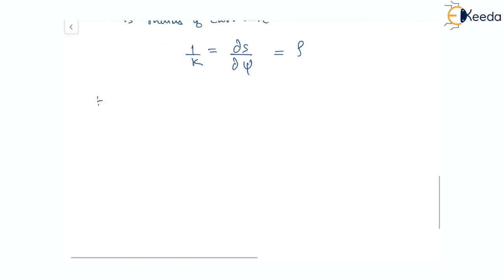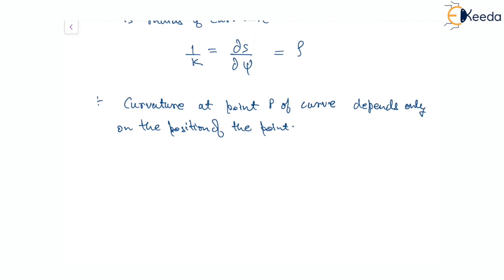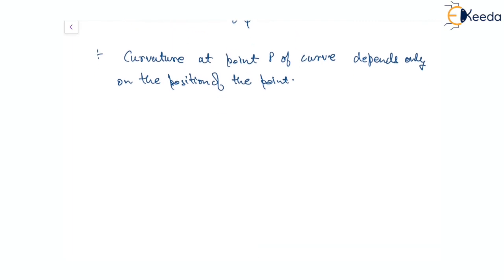The curvature at any point P of a curve depends only on the position of the point and does not depend on the coordinate system. There is a certain relation between s and psi known as the intrinsic equation of the curve.